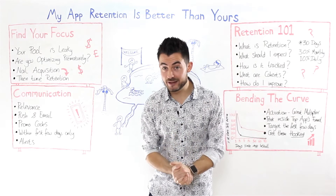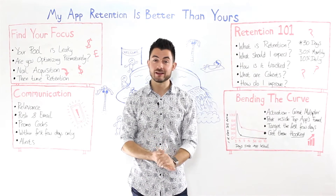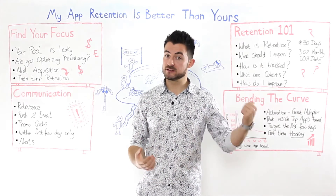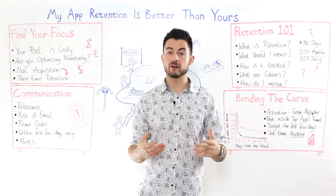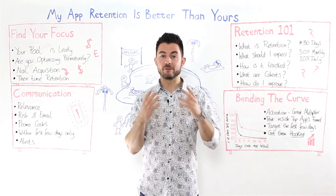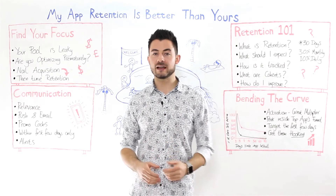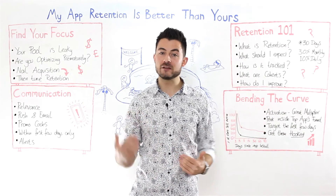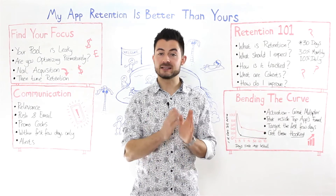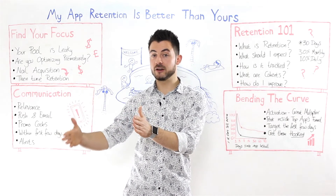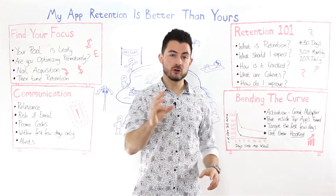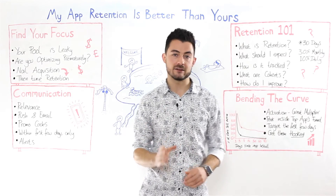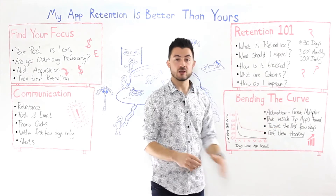Here's the thing: if you're trying to bend the curve and you're doing it with tactics at the retention stage, you're already way too late. Activation — which was the last video in the mobile metrics series — is the great multiplier for retention. Everything you do in the first couple of days when that user has the app, an excellent world-class onboarding strategy, the way you welcome users and make them feel valued, and having them achieve their success milestones very quickly — this determines whether they stay through day 30, day 60, and beyond.